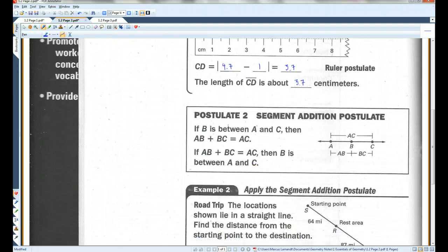Postulate 2, the Segment Addition Postulate. This is actually a postulate we will be using a lot. It says that if you have three points like this, and let's say that this segment was 3 inches and this segment was 2 inches, you could add those two segments together and say the whole thing is 5 inches.